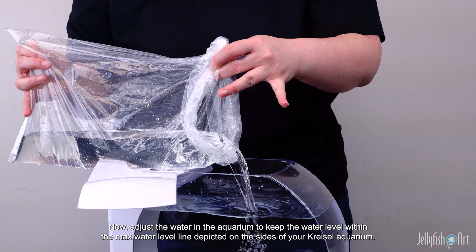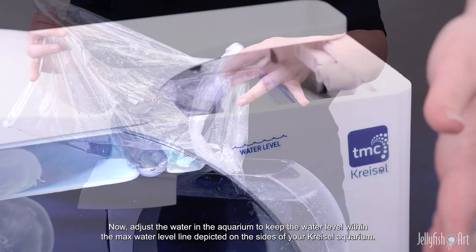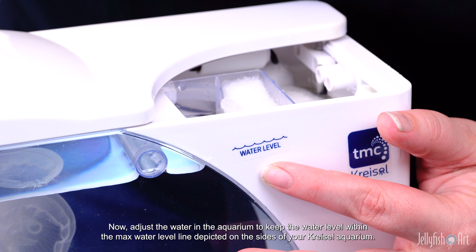Now adjust the water in the aquarium to keep the water level within the max water level line depicted on the sides of your Kreisel Aquarium.